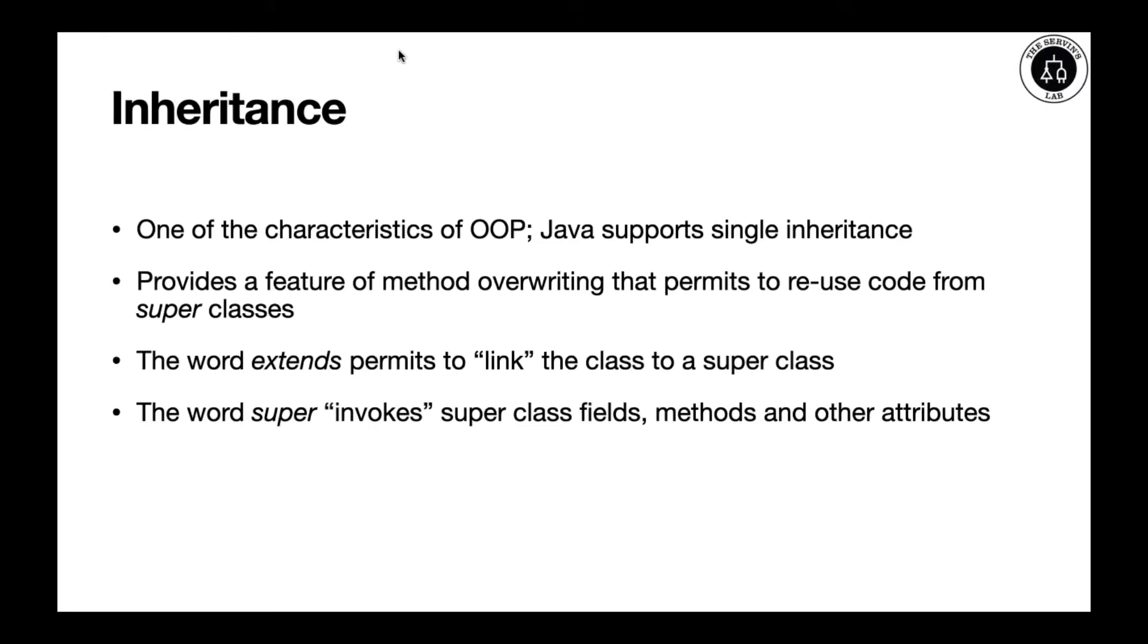We're going to introduce two keywords, extends and super, that only take place in the inheritance stage in object-oriented programming. The keyword extends permits linking the class to a superclass, whereas the keyword super invokes superclass fields, methods, or other attributes as long as they're not private.